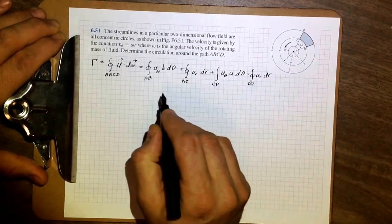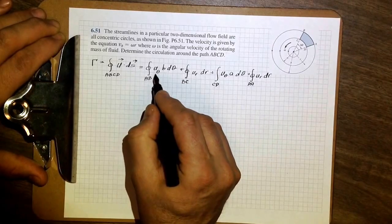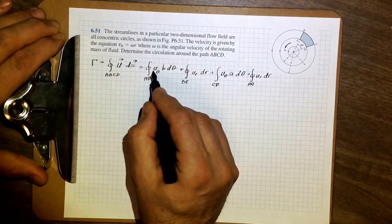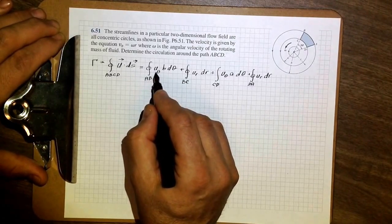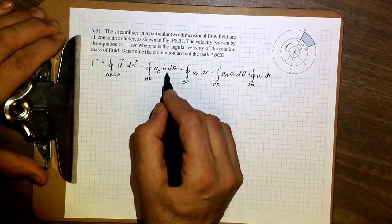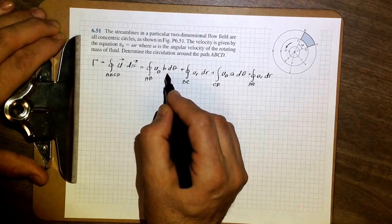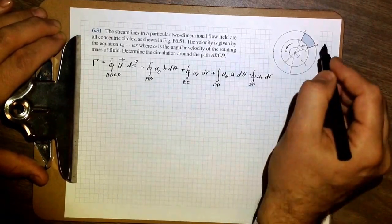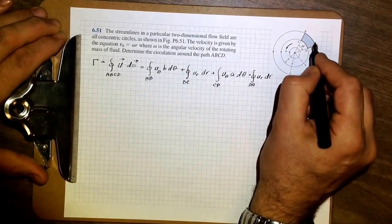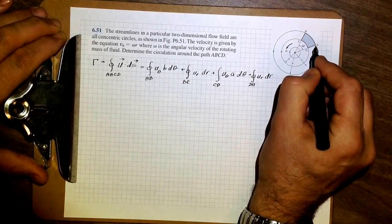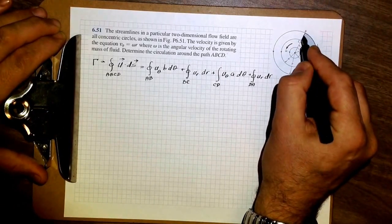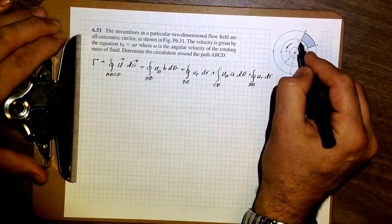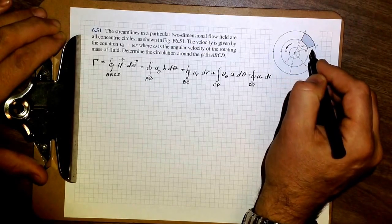As you can see, we only multiply the velocity component that is collinear — tangential — to the line segment in each case. Along AB, this is only the angular component. Along BC, it is just the radial component, and so on.